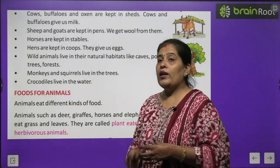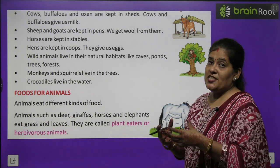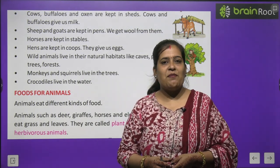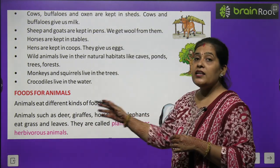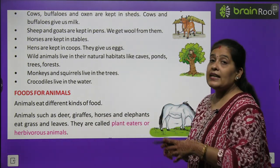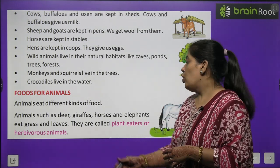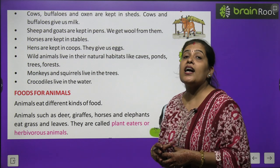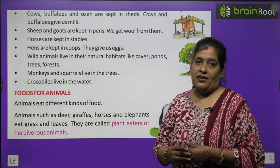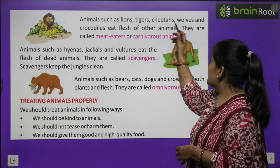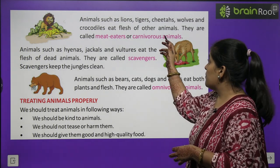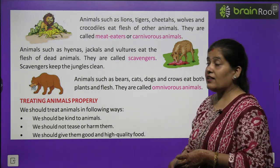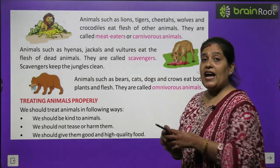Now we will learn about food for animals. All animals eat different types of food. Animals such as deer, giraffe, horse and elephant eat grass and green leaves — they are called plant-eaters or herbivorous animals. Animals such as lion, tiger, cheetah, wolf and crocodile eat flesh of other animals — they are called meat-eaters or carnivorous animals.